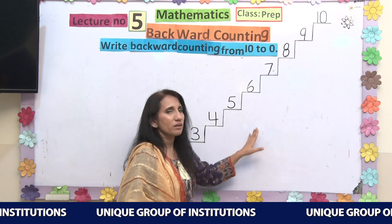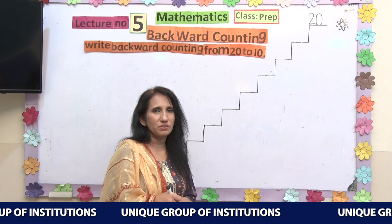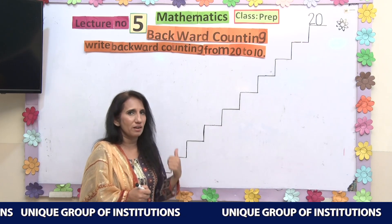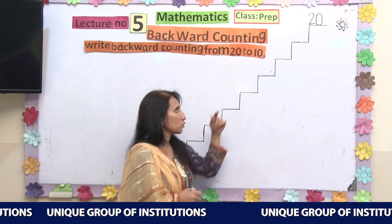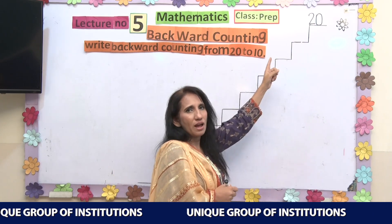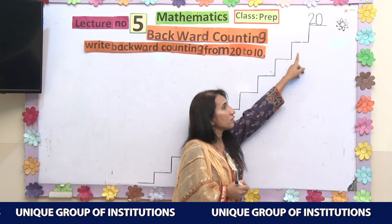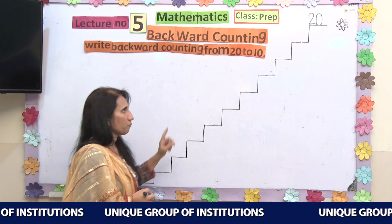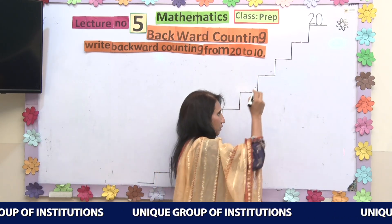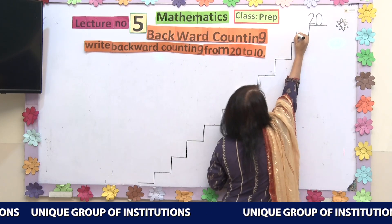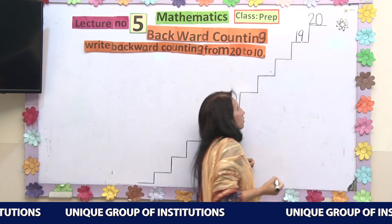Now we will learn from 20 to 11. Earlier we learnt backward counting from 10 to 0, and now we will see the backward counting from 20 till 11. So 20 is written over there. As we have done earlier, we will do the same thing — write from the starting point, not the ending point. What comes before 20? Before 20, we have number 19.